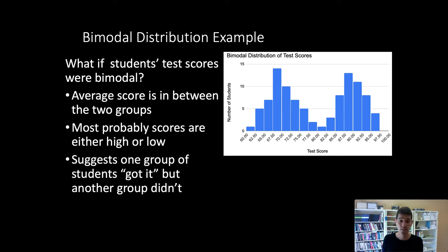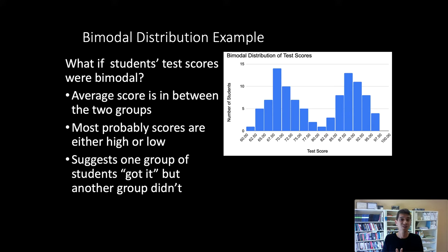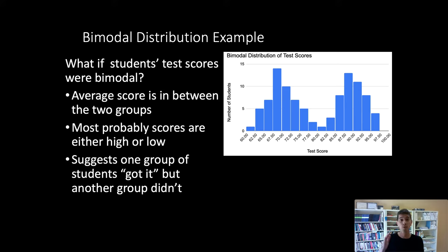Simulations let us understand what the resulting distributions look like for different scenarios. Is it a scenario where students are equally likely to do well versus poorly? That creates a uniform distribution. Is it a scenario where most students do pretty okay and some do a little better or lower? That's a normal distribution. Is it a scenario where half the class is getting information the other half isn't? That would create a bimodal distribution. When I see what the actual distribution of test scores looks like, I can compare it against these simulated distributions to understand which scenario best matches the real outcome.